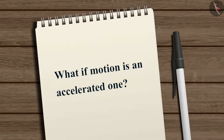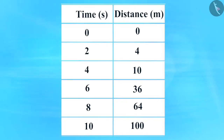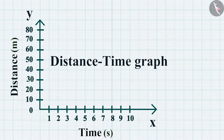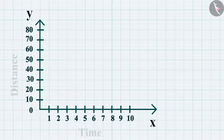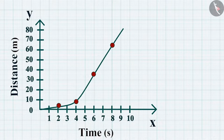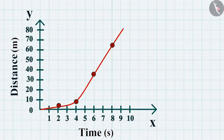What if the motion is an accelerated one? We can plot a distance-time graph for accelerated motion as well. Given here is a table showing the distance covered by a car in respective time intervals. Once you plot the points, the graph shows a non-linear variation of distance traveled with time, thus indicating the motion of an object with non-uniform speed.